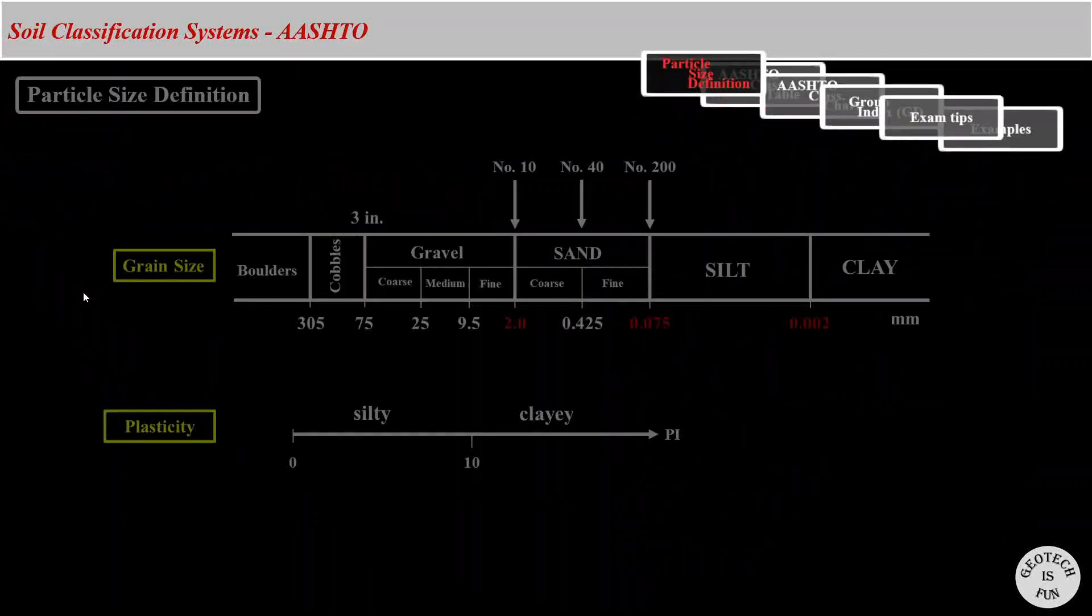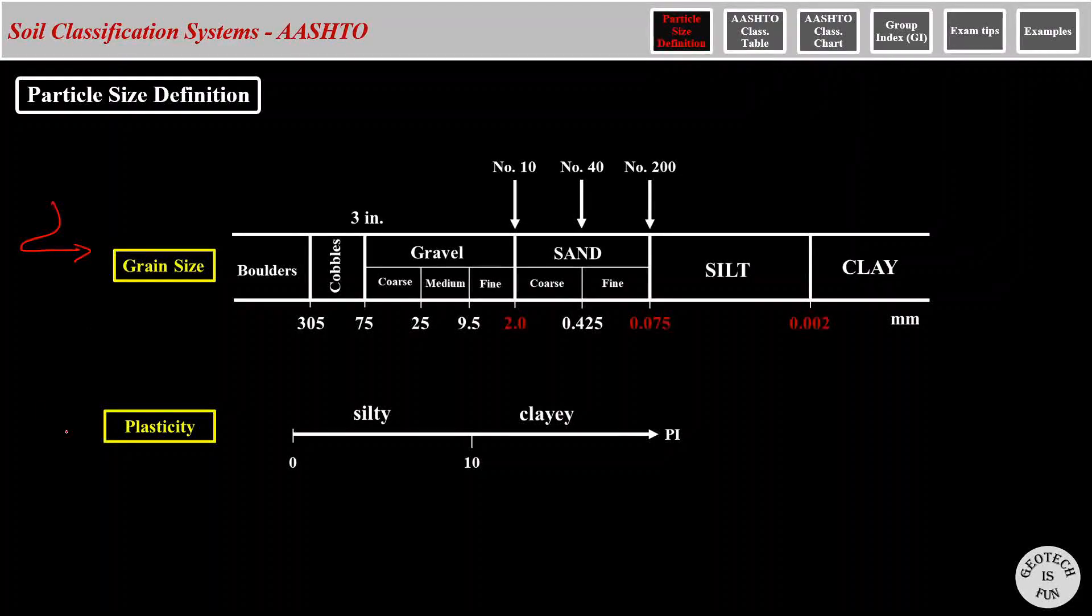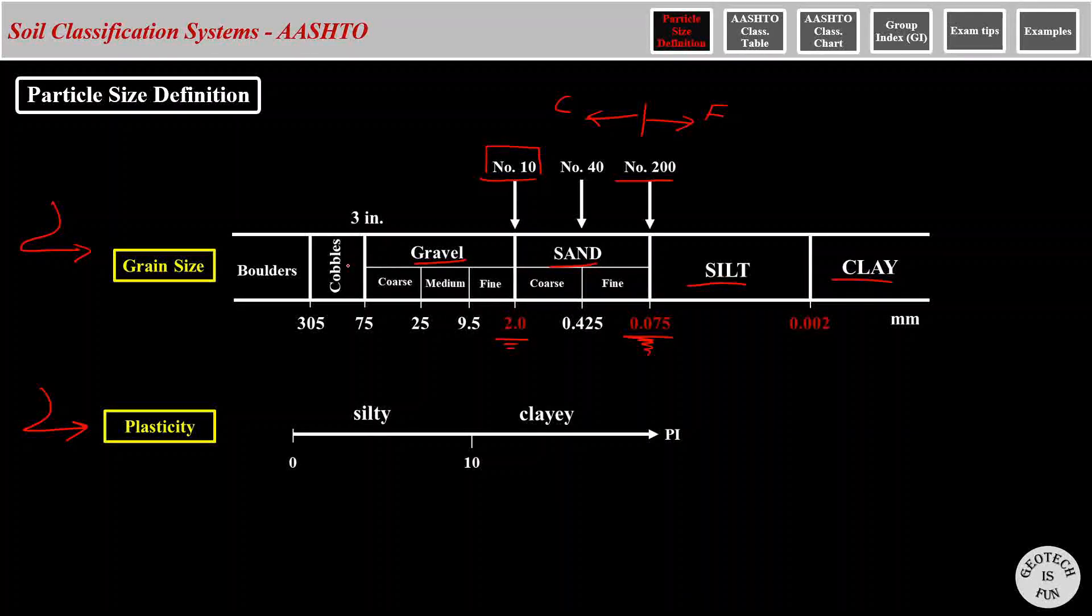AASHTO defines particles based on their grain size and plasticity. According to AASHTO, the boundary between fine-grained particles, which are silts and clay, and coarse-grained particles, which are sand and gravel, is sieve number 200, which has an opening size of 0.075 mm. The boundary between sand and gravel is sieve number 10, which has an opening size of 2 mm. And finally, the boundary between gravel and cobbles and boulders is 75 mm, which is equal to 3 inches.